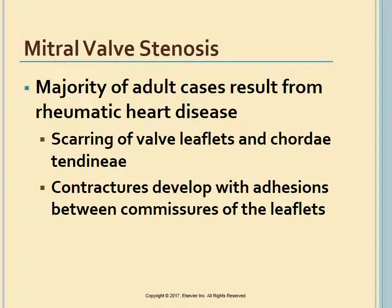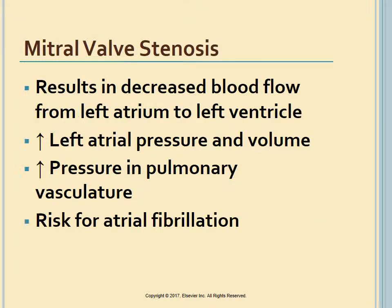Most cases of adult mitral valve stenosis result from rheumatic heart disease, which is widespread in underdeveloped countries. Less common causes include congenital mitral stenosis, rheumatoid arthritis, and systemic lupus. Rheumatic endocarditis causes scarring of the valve leaflets, and contractures and adhesions develop between the commissures or junctional areas.